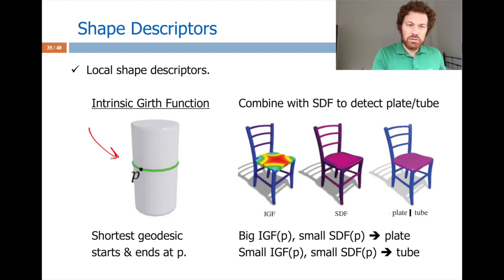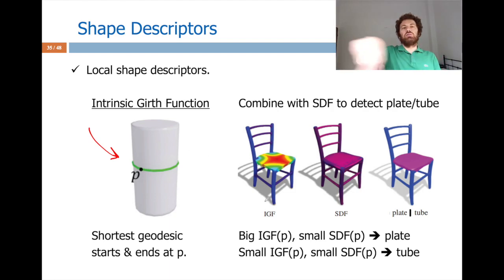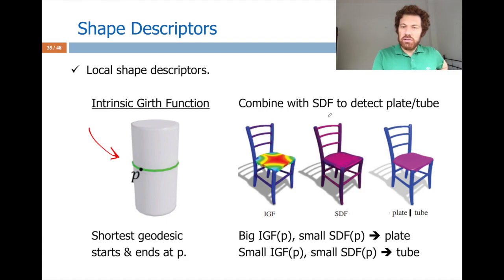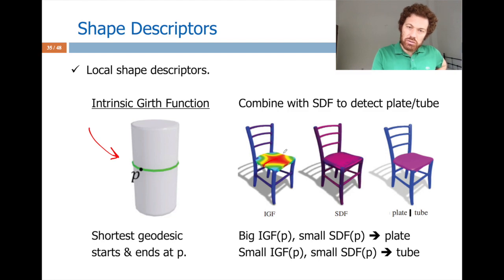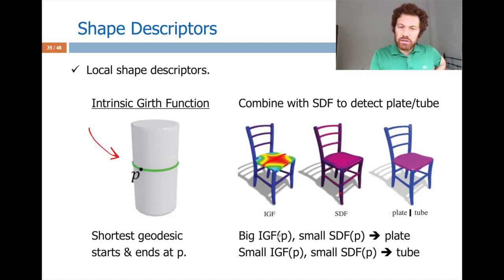The Intrinsic Girth Function (IGF) is the shortest geodesic that starts and ends at P with non-zero length — like throwing a belt around that point. A large IGF value occurs around the torso because you need a long rope to encircle it. Combined with SDF: large IGF and small SDF indicates a plate-like structure; small SDF and small IGF indicates a tube.